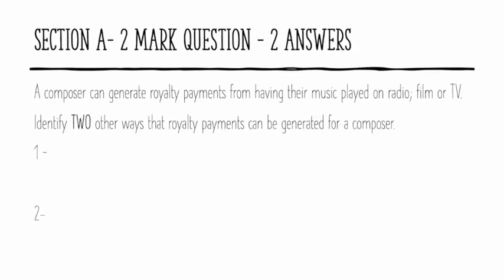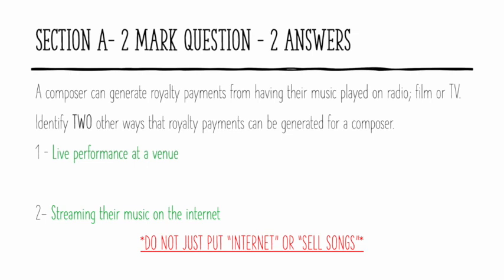For our next two mark question: a composer can generate royalty payments from having their music played on radio, film, or TV. Identify two other ways that royalty payments can be generated for a composer. These royalties could be generated through live performance at a venue or streaming their music on the internet. You have to say streaming the music on the internet — you can't just put 'internet'. Other valid answers include making a recording on CD or any other format, through printed sheet music, playing in a public place, and recording a cover.